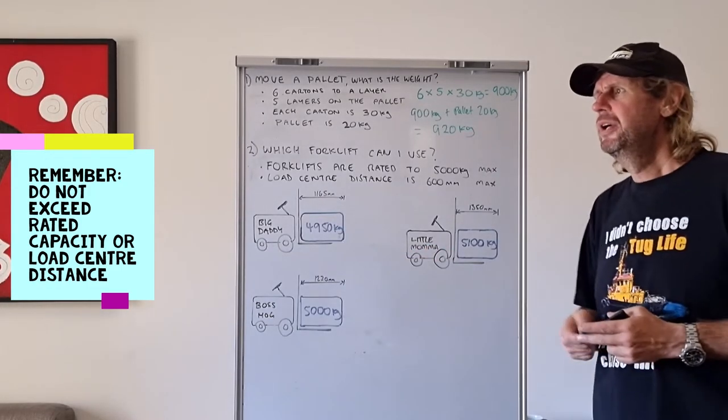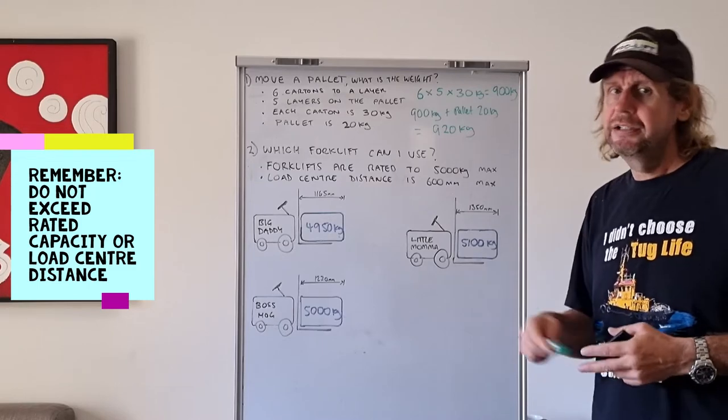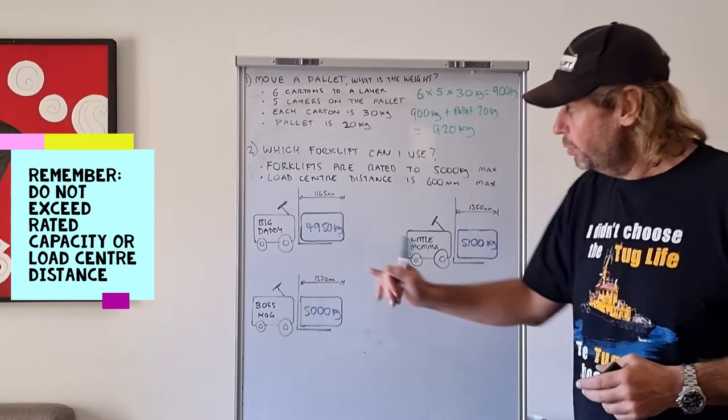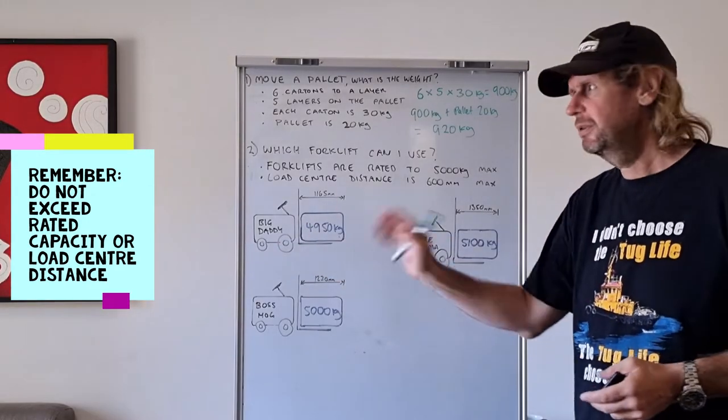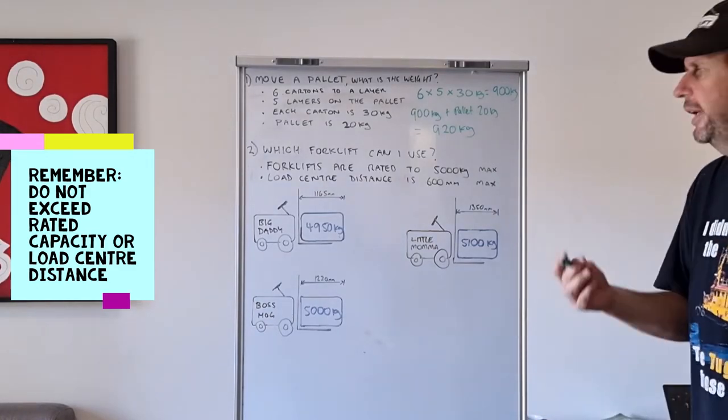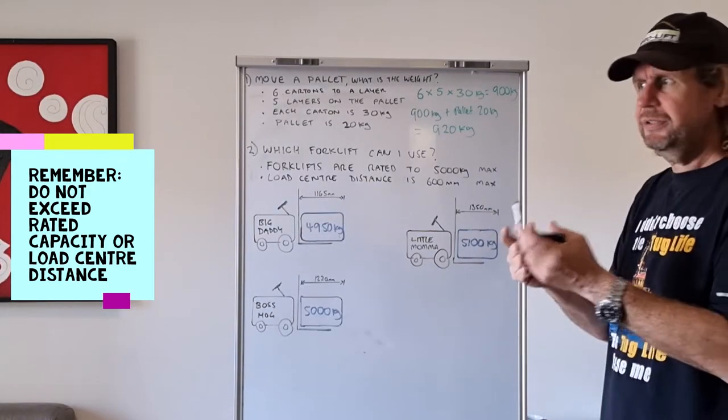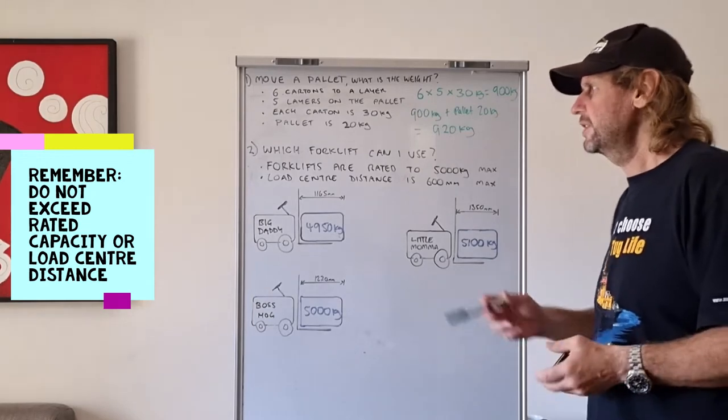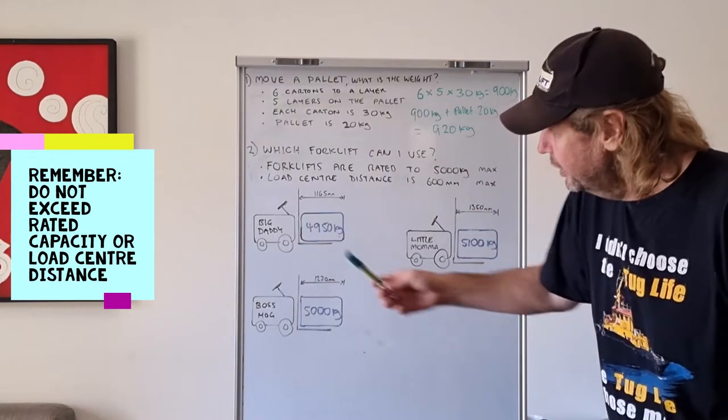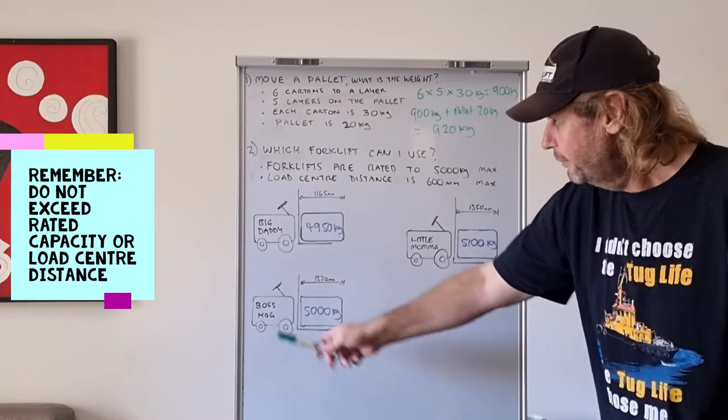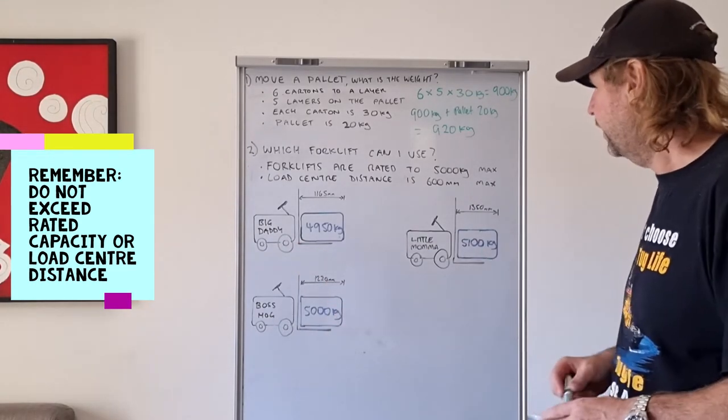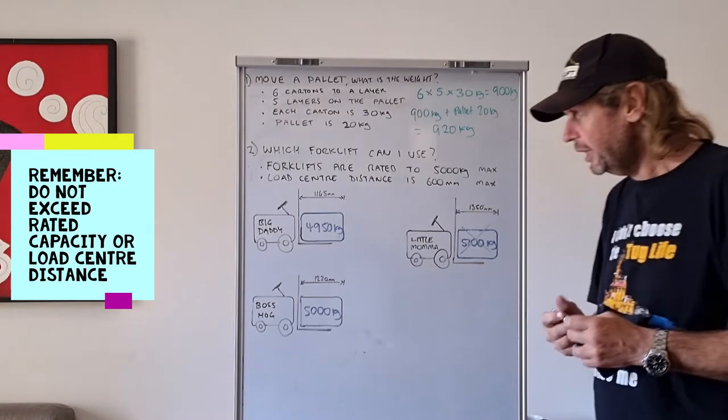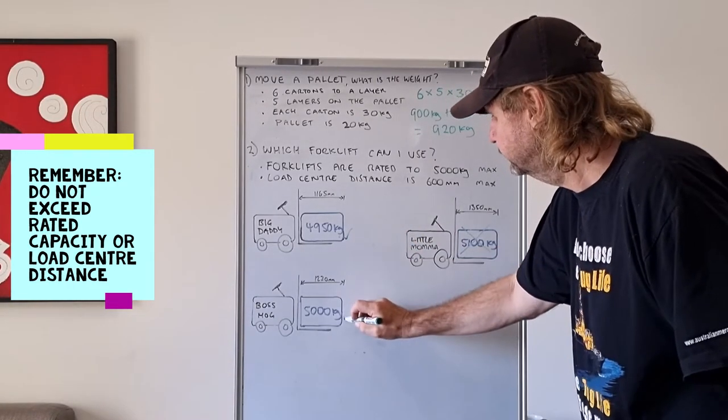You can use the tines and pick it up. So what happens if we have something over that? Well, the forklift will tip. And then you're in a world of shit again. So we don't want that. And that's why when we load forklifts, we have them hard up against the heel or hard up against the load backrest because if you're out a hundred mil, suddenly your load center distance, you could be exceeding that and then you're going to tip the forklift. Alright, so the forklifts are rated at 5,000 kilograms max. This load is 4950 on Big Daddy. Boss Hog has 5,000 kilos. Little Mama has 5,100 kilos. So she's over the maximum rated capacity. These two could be okay.